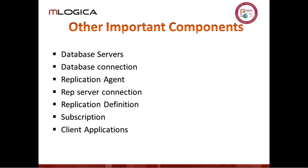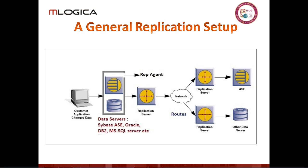Other important components of the rep server include the database servers we're connecting to, database connections going from the servers to wherever we're going, and replication agents which exist for each source database. Replication agents identify changes being made and pass them to the replication server. We also have replication definitions that identify what we're going to replicate, subscriptions to the replicated data, and client applications that are hopefully relatively unaffected by everything going on.